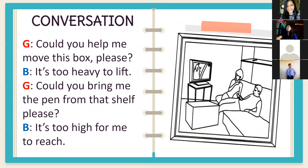This conversation shows an example of 'too' and 'enough'. Russell, please read the girl's part, and Anthony will be the boy. Girl: 'Could you help me move this box, please? It's too heavy to lift.' 'Could you bring me the pen from that shelf, please? It's too high for me to reach.'